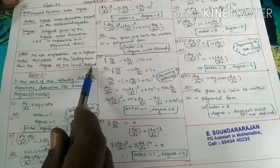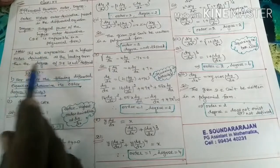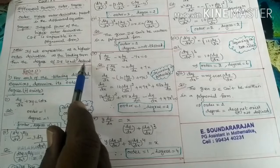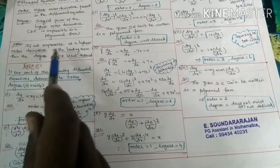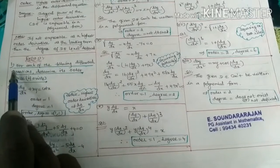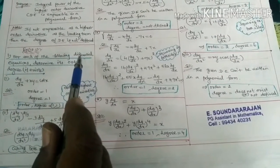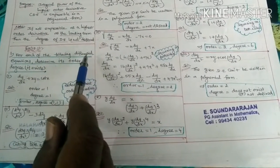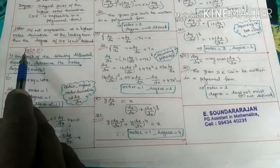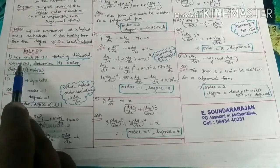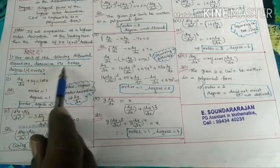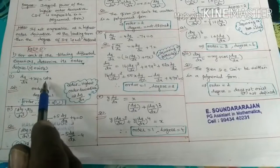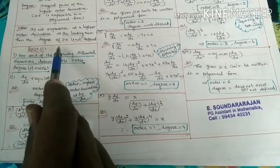Note: the degree is defined only when the equation is in polynomial form. If not expressible as a polynomial, the degree is not defined. We will find the order and degree for each of the following differential equations in Exercise 10.1. If the polynomial form is not defined, the degree does not exist.